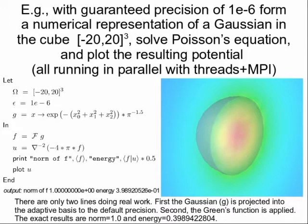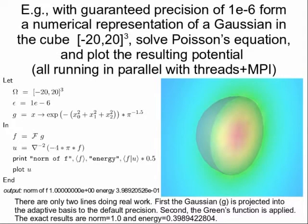Here's an example of a very simple problem in the highest level of composition available for MADNESS applications. We're going to compute to a guaranteed precision of 10 to the minus 6 the electrostatic potential of just a simple Gaussian — but hopefully you can imagine a much more complicated function, maybe resulting from the solution of another set of equations. This will all run in parallel using either threads or MPI. In the program we specify the domain and precision, we define a function to compute our Gaussian, and it's actually the next two lines that do all the work. The first projects our function G into the multi-wavelet adapted basis set to the required precision, and the next line solves Poisson's equation — not by iteratively solving the differential equation, but by applying the Green's function as a single sparse matrix-vector product.